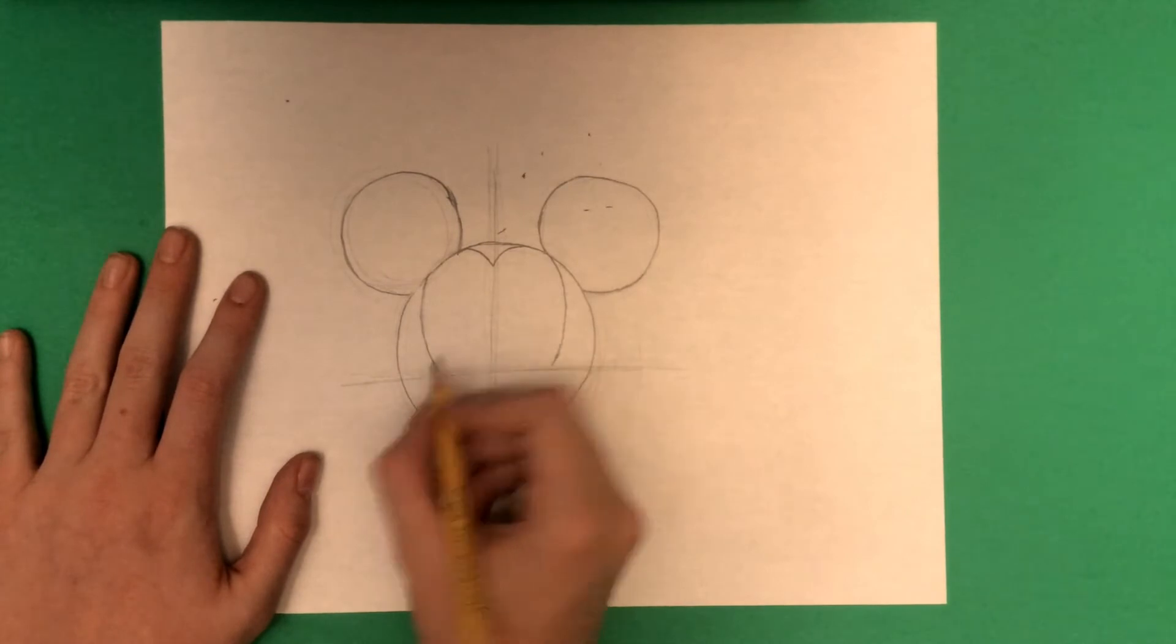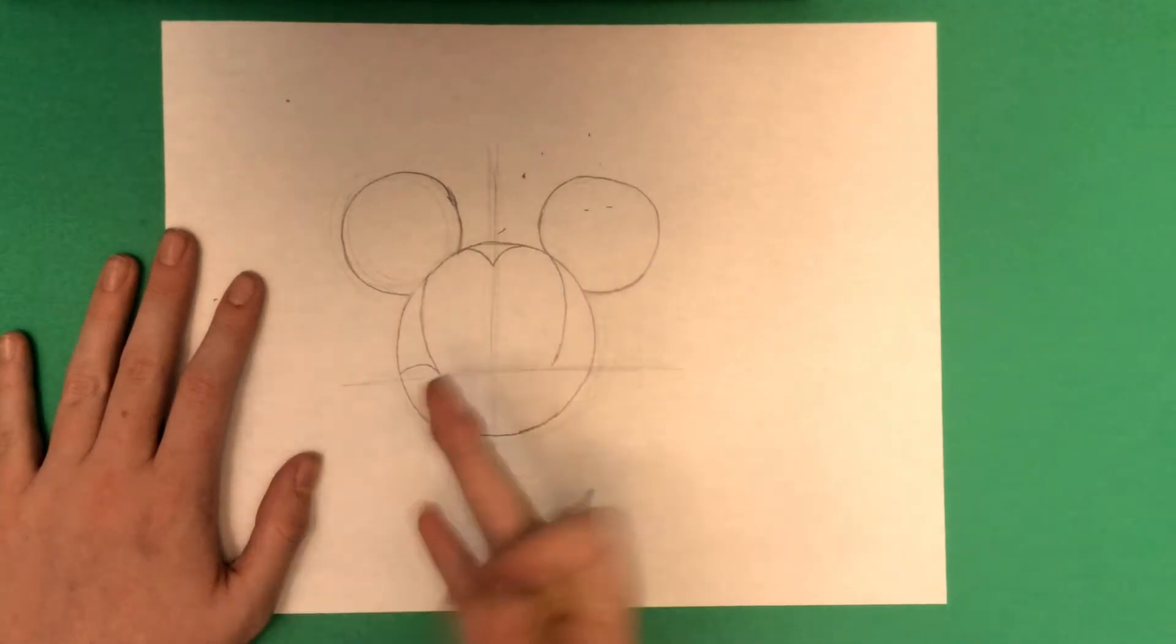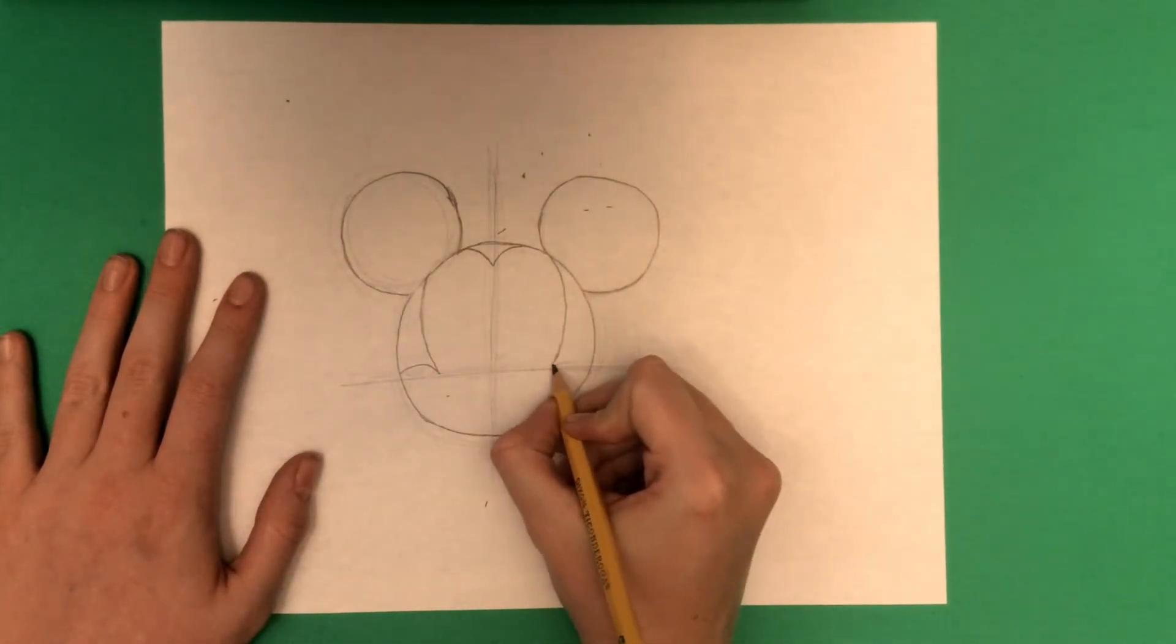You're going to make Mickey's cheekbones. You're going to start on this horizontal line and then just go from the edge of his face and make a small curve to the line you just made. Then do that on the other side and you're good.